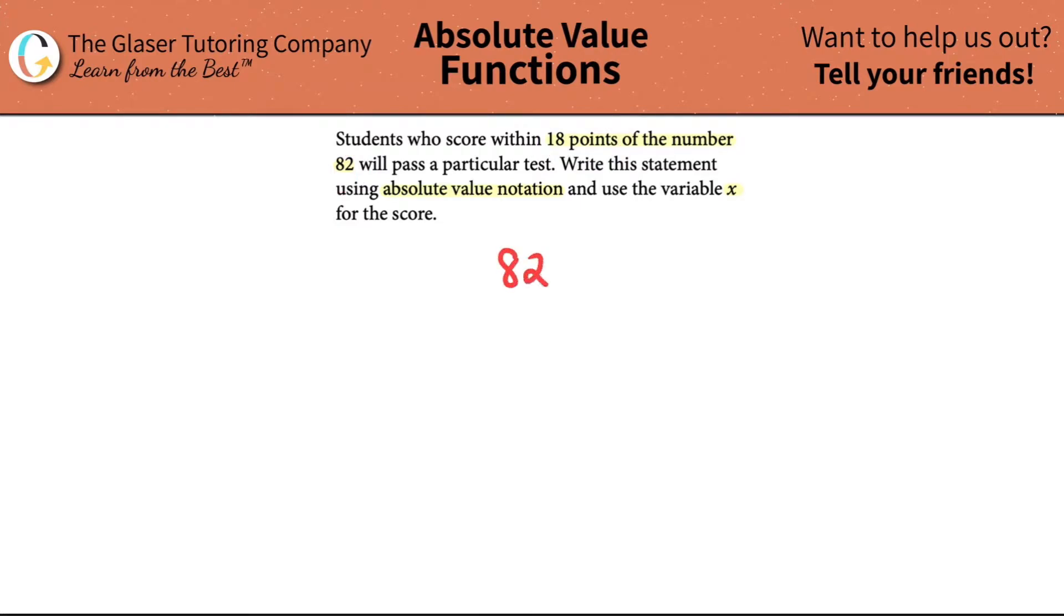And technically they didn't say whether you had to get 18 points above 82 or 18 points below 82. They just said that the students who score within 18 points will pass a particular test.